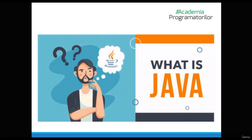Let's start from the beginning. What is Java? Java is a platform-independent, object-oriented programming language. You can run it on any operating system and its purpose is to create a large variety of products: web applications, Android applications, iOS applications and desktop applications. Our courses are structured so that every person could understand this programming language, even though he or she had not interacted with the software domain before.